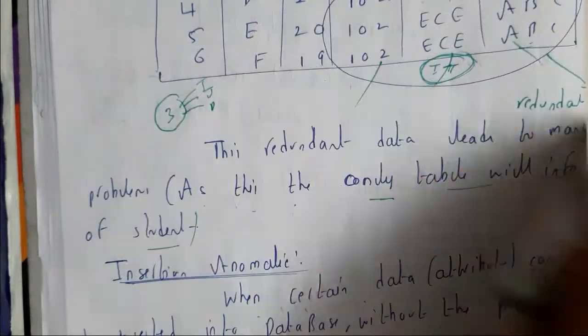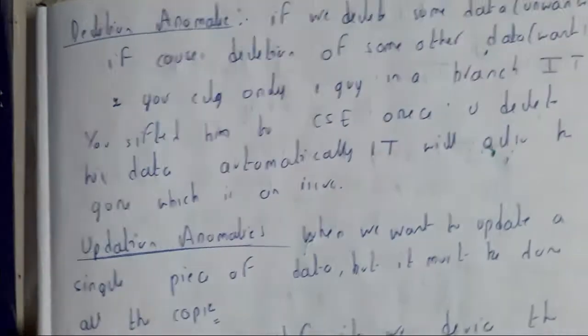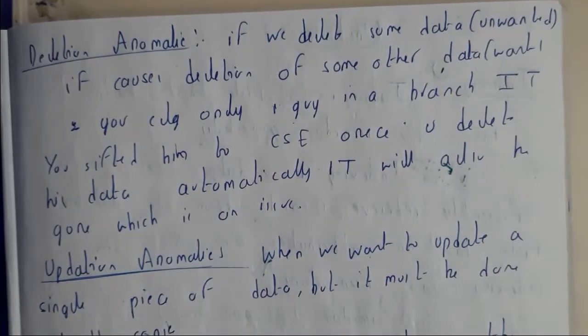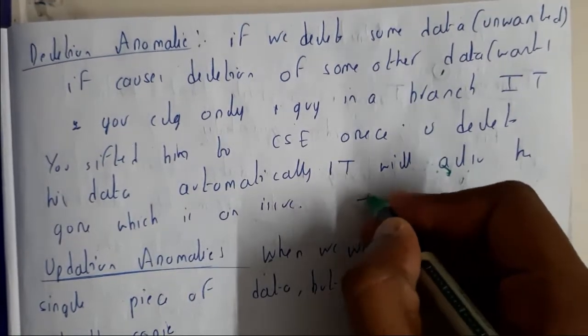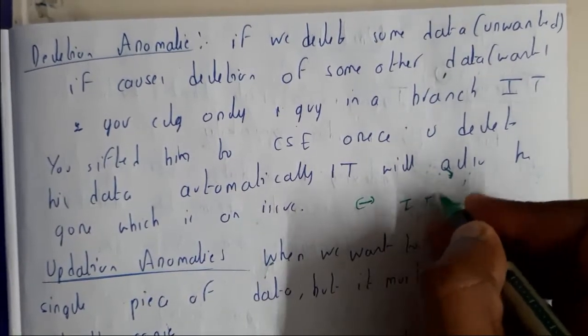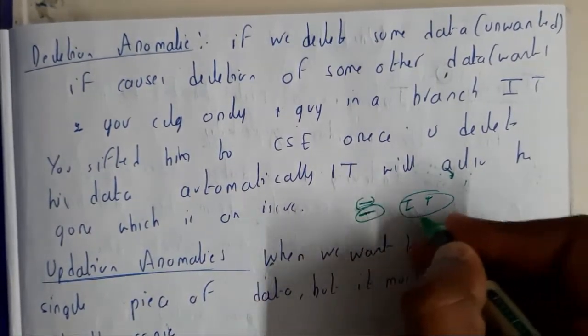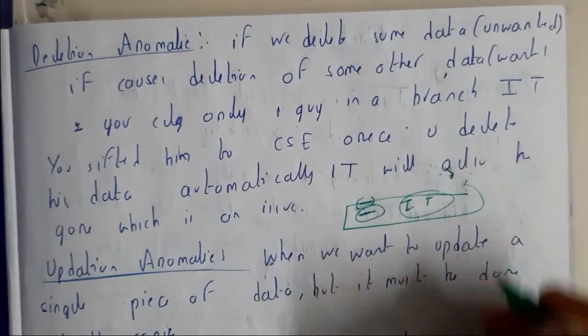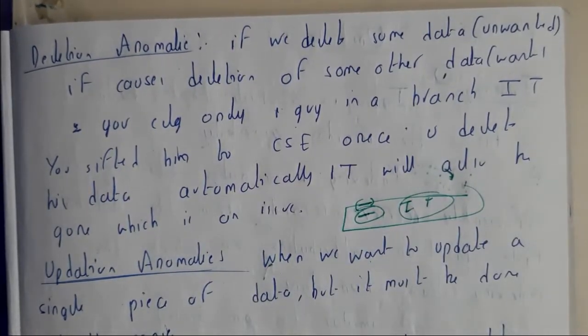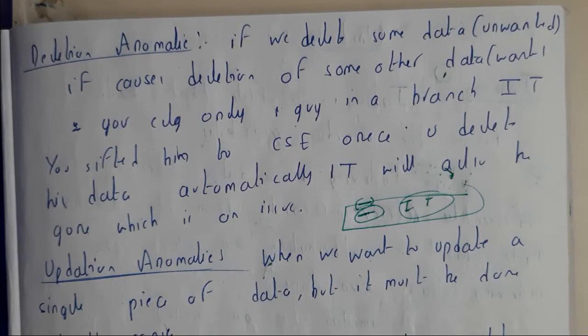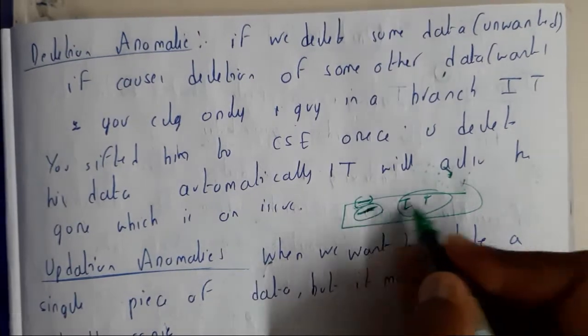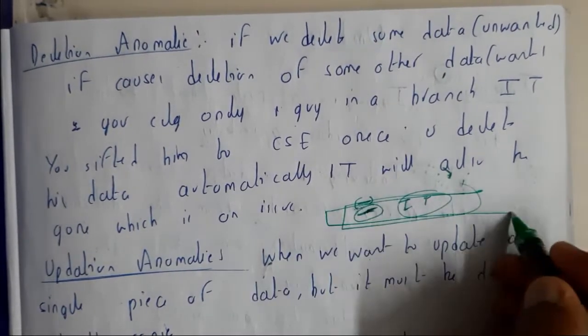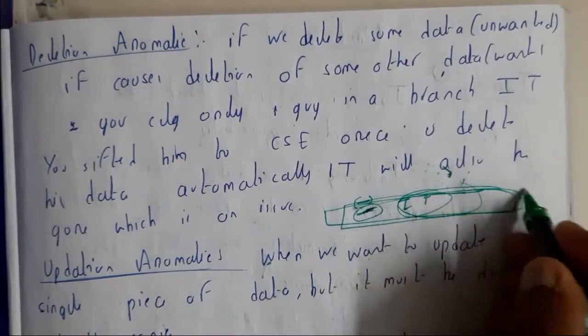The second type will be deletion anomaly. Let us assume you establish the IT branch and there is only a single student. Now this student has shifted colleges and even your college is having the IT department, but it is closed for now. If you delete the record of this student, automatically the IT records, the IT HOD, the IT details will all be removed.